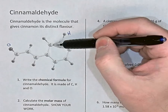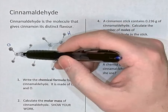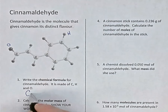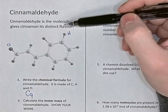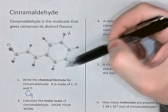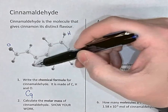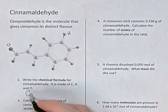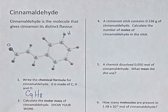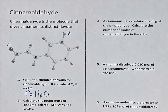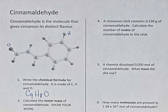For cinnamaldehyde, we have six carbons in the ring and then counting further: seven, eight, nine — we have nine carbons, so C9. Then counting the hydrogens: one through eight, so H8. And then we have that one oxygen atom, so just O. The molecular formula for cinnamaldehyde is C9H8O.